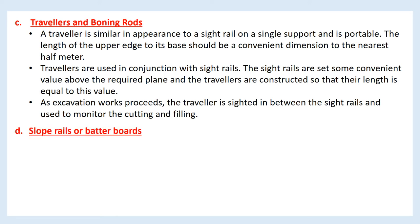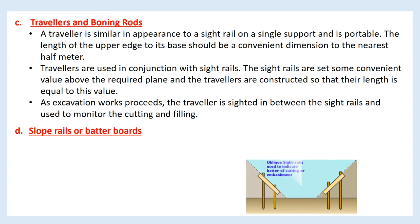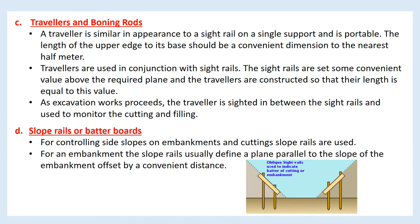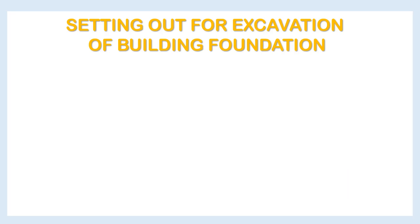Slope rails or batter boards are used for controlling side slopes on embankments and cuttings. For an embankment, the slope rails usually define a plane parallel to the slope of the embankment, offset by a convenient distance.